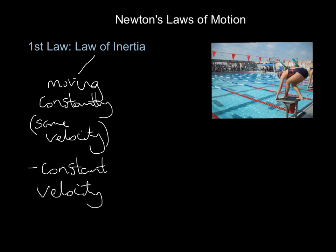If you are moving at constant velocity, you have inertia. But inertia can also mean that you are absolutely 100% still, as this swimmer is at this moment on the block. So when she's still on the box she has inertia, and when she is swimming at constant velocity in the pool she also has inertia. Inertia describes your current state.